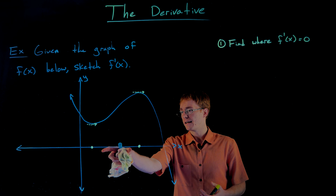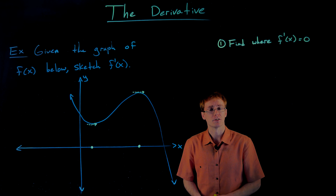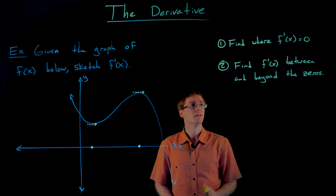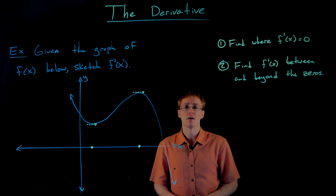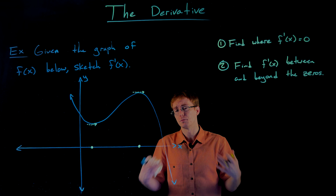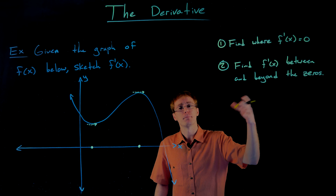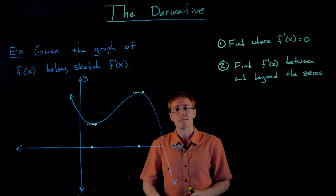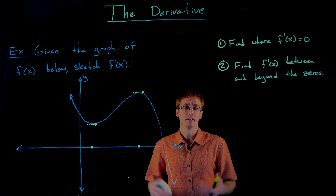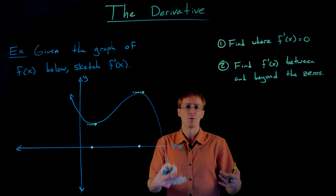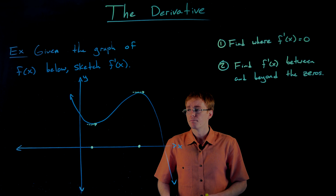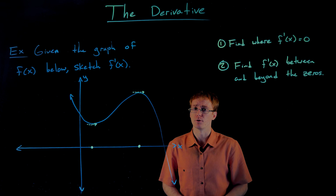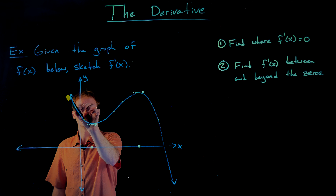So how do we sketch the rest of the graph of the derivative? We just have to figure out how the derivative behaves between these x-intercepts and beyond them. To do that we find some sample points and figure out what the value of the derivative would be at those points. Our second step is to find values of the derivative between and beyond our zeros, because in between these zeros the derivative should always be positive or always negative — it can't switch sign unless it crosses through one of our zeros or a discontinuity. Since we don't have the equation, we'll do this qualitatively.